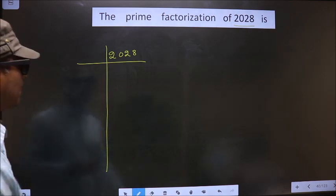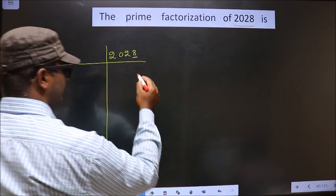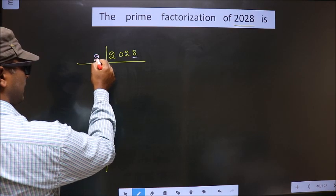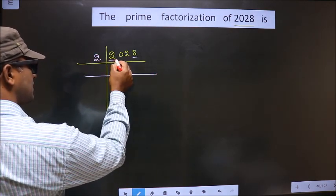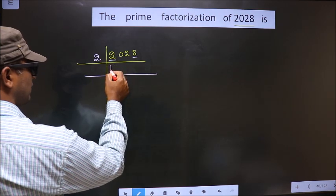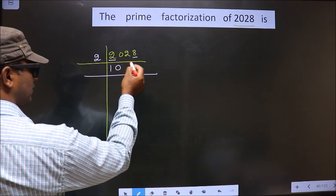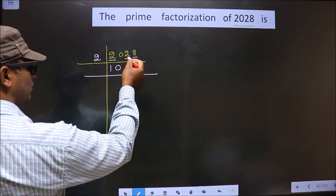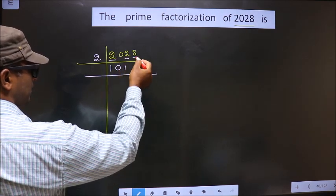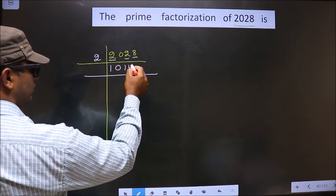Next, in this number the last digit is 8 which is even, so we should take 2 here. Now the first number is 2. When do you get 2 in the 2 table? 2 once is 2. Next number is 0 — as it is, you write it down. Next number is 2; 2 once is 2. Next number is 8; when do you get 8 in the 2 table? 2 fours is 8.